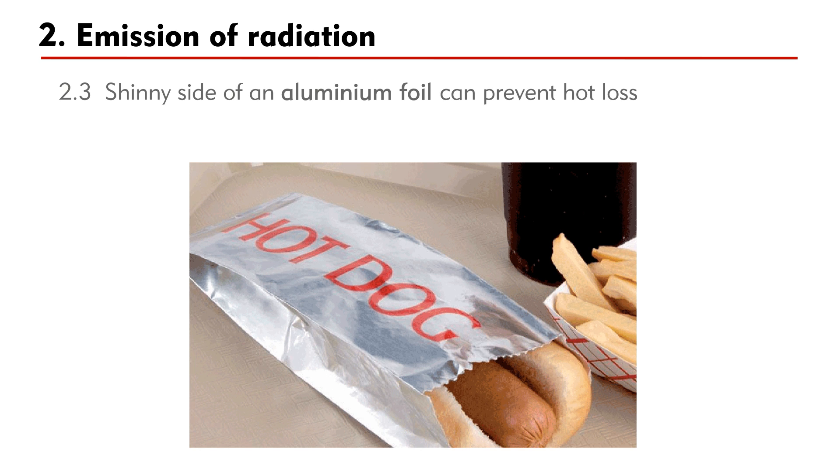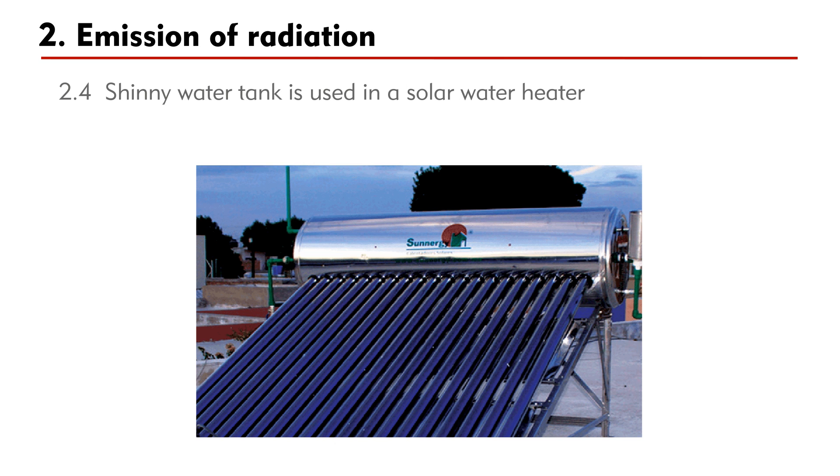Thirdly, the shiny side of an aluminum foil can prevent heat loss due to radiation. The shiny side should be facing out in wrapping food for later use. Fourthly, shiny water tank is used in a solar water heater to reduce heat loss by radiation.